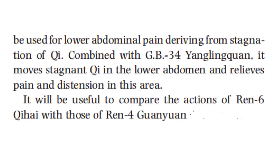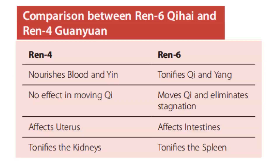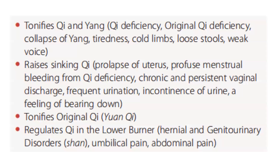It will be useful to compare the actions of REN6 with those of REN4. REN4 nourishes blood and yin, has no effect in moving qi, affects the uterus, and tonifies the kidneys. While REN6 tonifies qi and yang, moves qi and eliminates stagnation, affects the intestines, and tonifies the spleen.